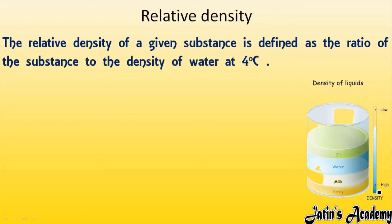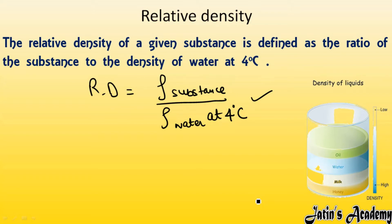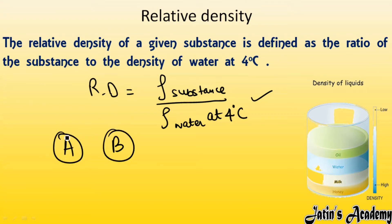Relative density is defined as the ratio of the density of a substance to the density of water at 4 degrees Celsius. Relative density gives a comparison — for example, if we have two objects A and B and want to compare which has more density, we use the concept of relative density. By using this formula, we can easily check the comparison between the densities of two objects.